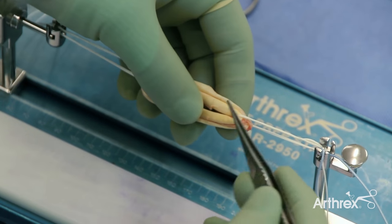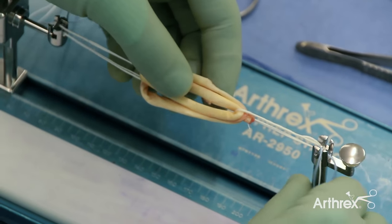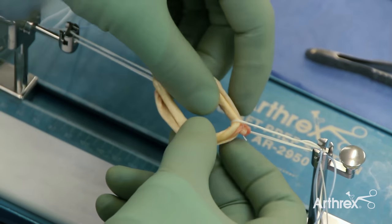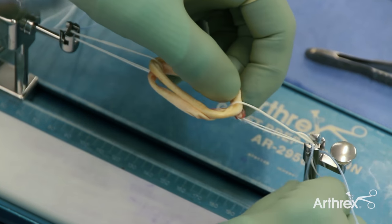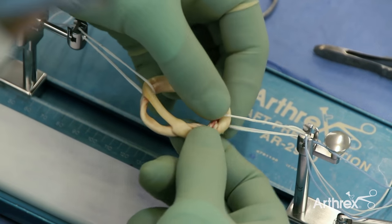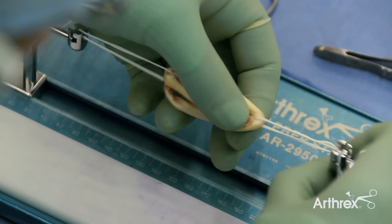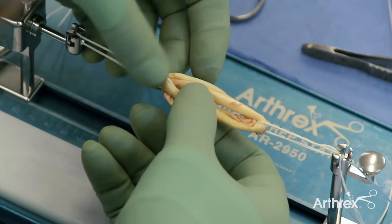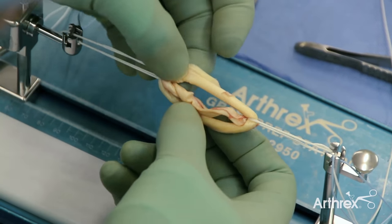The knot at this stage is on the outer loop of the graft link. This can then be manipulated onto the inner loop by simply inverting both ends of the graft. The graft is essentially turned inside out, and you can see the knot is sitting on the inner loop.